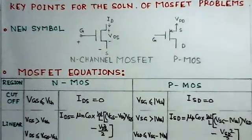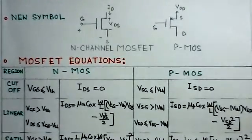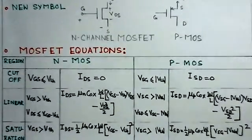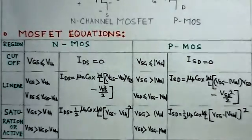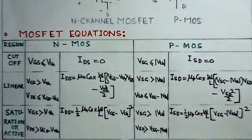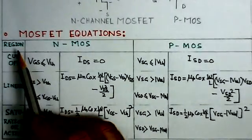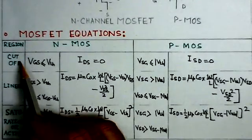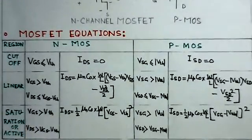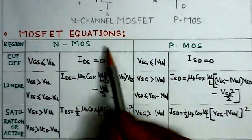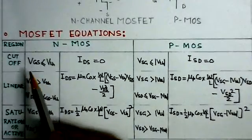Now, the other important part here is the MOSFET equations. These MOSFET equations are very much helpful for solution of various problems which we will be considering here. You can notice here, this first column gives me the region, whether it is a cut-off region, this is a linear region or saturation region. The saturation region is also called as an active region. And this is for the N-MOS and this corresponds to P-MOS.